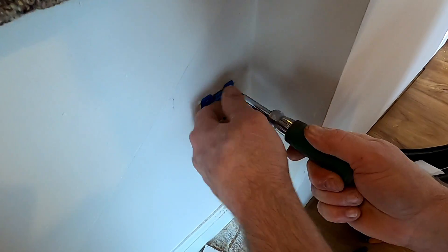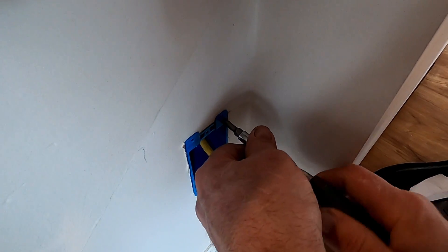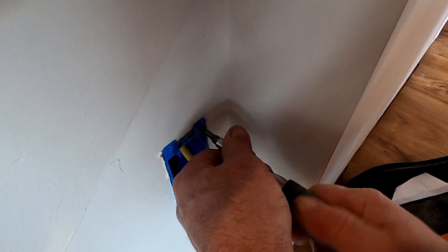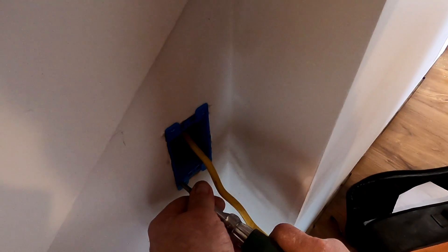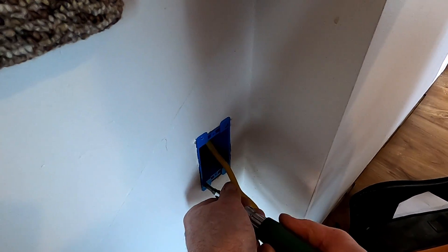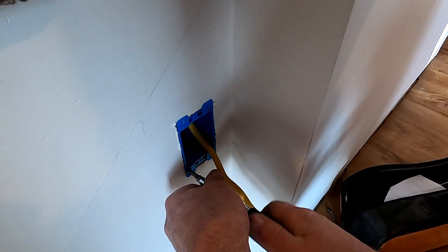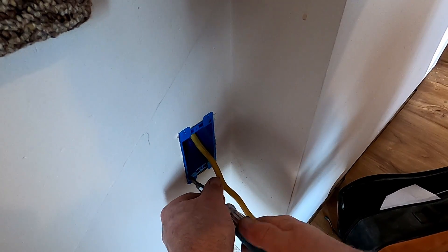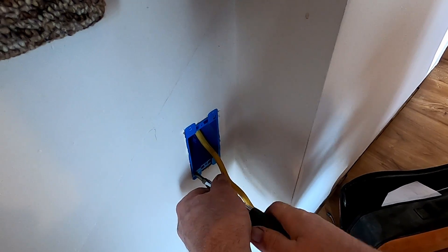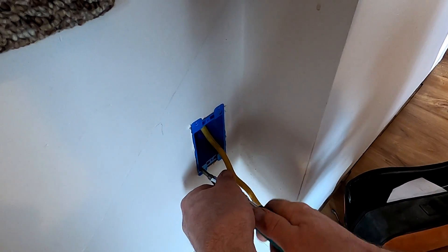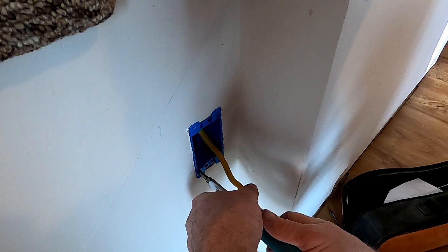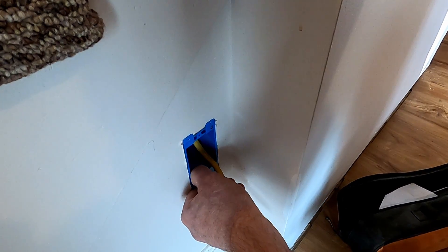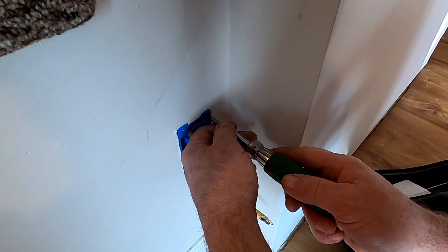As you're screwing this in, those wings will fold up and pull against the back. That's how you tighten this box up.